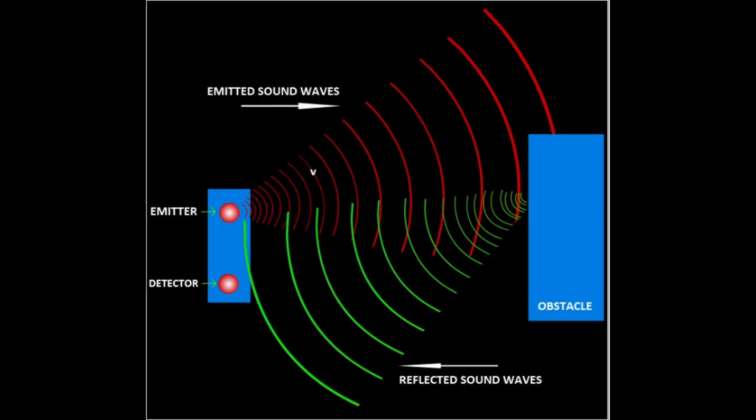Ultrasonic sensors are also used as level sensors to detect, monitor, and regulate liquid levels in closed containers, such as vats in chemical factories.